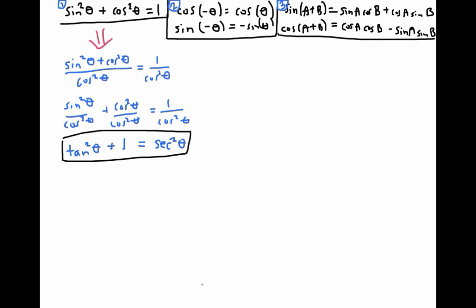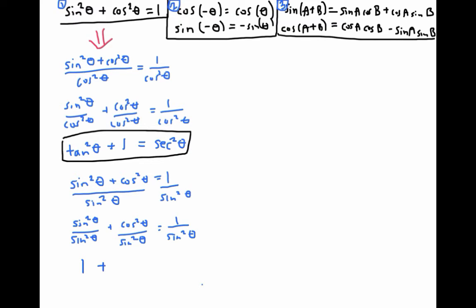If we want an identity involving cotangent and cosecant instead, we start with the Pythagorean identity and divide both sides by sine squared theta. Breaking up the fraction gives us one plus cotangent squared theta equals cosecant squared theta, since cotangent is cosine over sine and cosecant is one over sine.